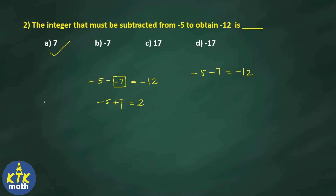These kinds of questions depend on how you understand them. If you misread the question as 'some number minus minus 5 equals minus 12,' you will not get the correct answer. Read the question once and twice, then you can frame the equation to find your correct answer.